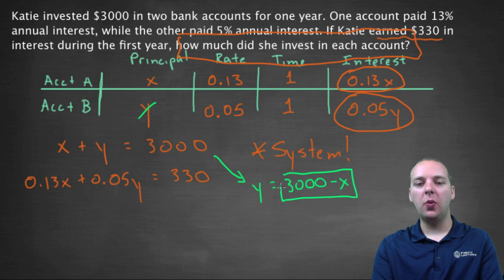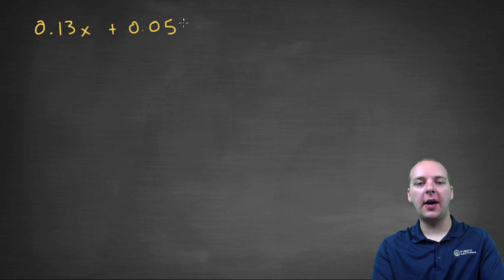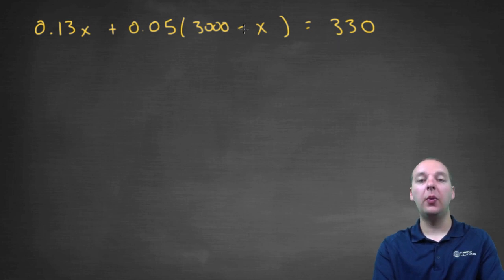And then now that you know what Y is equal to, you can go ahead and take that quantity and plug it in for Y in the other equation. So you'd have 0.13X, and actually I think I'll do this on a new page just so I have room to work. 0.13X plus 0.05Y, but Y as you know was three thousand minus X. And that would equal three hundred and thirty dollars.